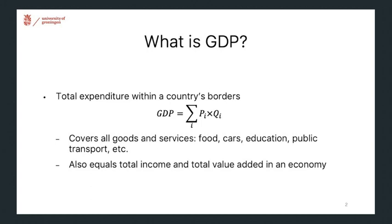First, it's helpful to define what we mean by income here, and more specifically that is gross domestic product — total expenditure within a country's borders. That can be expenditure on food, cars, education, public transport, etc. It's helpful to distinguish between the price of each product p and quantity consumed q. So the number of cars times the price of a car gives the total spending on cars in the economy. A useful feature of GDP is that it's also equal to the total income generated using labor and capital and the total value added generated in the economy. But for the present purposes, let's focus on expenditure.